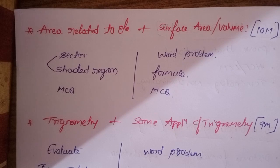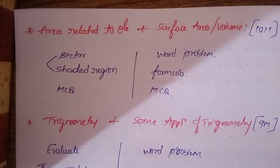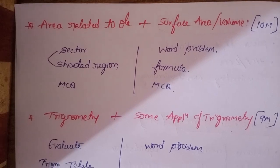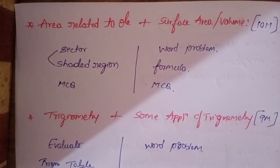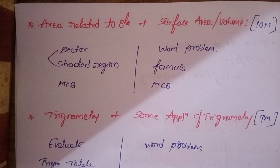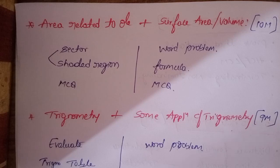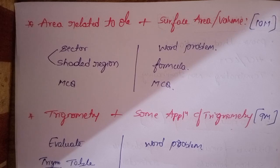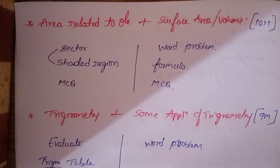Area related to circles and surface area volumes. The word problem is compulsory. Here we have theory formulas. We have word problem five marks or four marks in formulas. This is the multiple choice question.